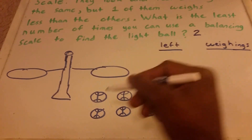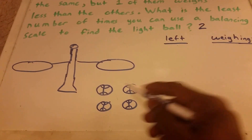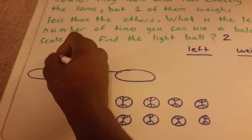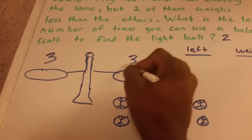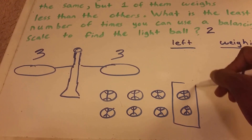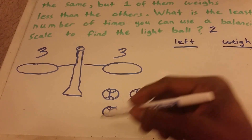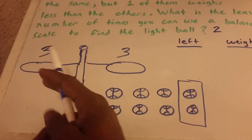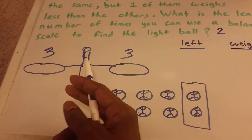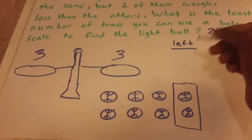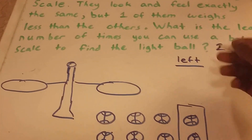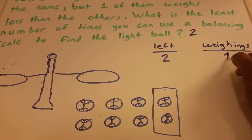Let's try this: take six of the balls and split them — three on each side — leaving two balls aside that we're not weighing right now. Let's say the two sides are equal. If they're equal, we get rid of those six balls and we have the two remaining balls left. That was one weighing.